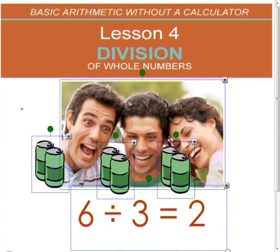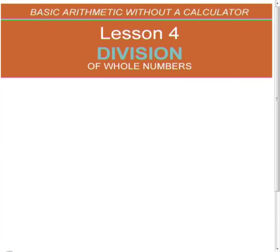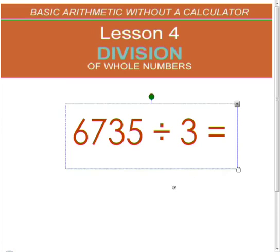Alright, so what if we're talking about a bigger problem? Say something like this. 6,735 and you divide it by three. Well, to begin with, let's talk about what we're going to call these numbers to make it a bit easier.